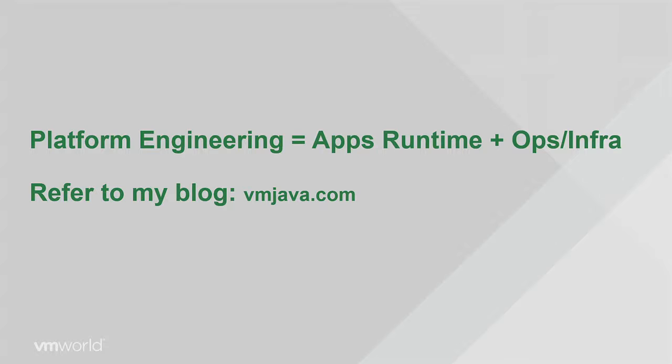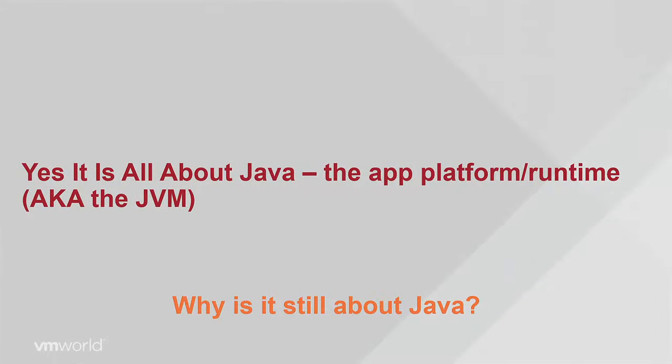I want to define context for this content and what I see happening in the future. I've done this session at SpringOne and ArcConf. You can find the full explanation of platform engineering at my blog vmjava.com. Essentially, platform engineering is application runtime knowledge coupled with infrastructure knowledge. The problem today is developers don't have application runtime knowledge. The Java Virtual Machine is an example of an application runtime — you have Java code living inside the JVM, which is the application runtime, running on the infrastructure compute space.